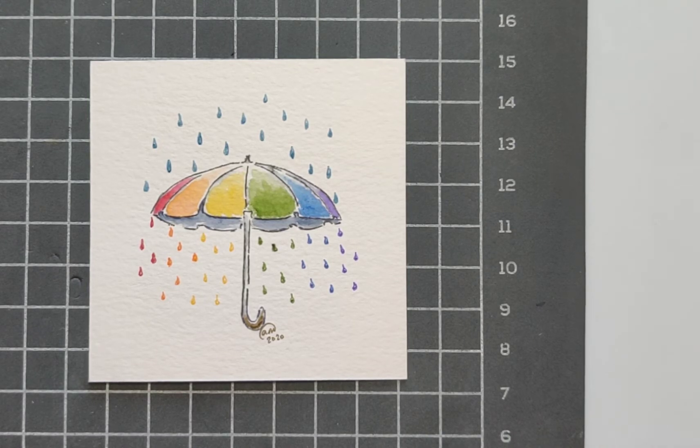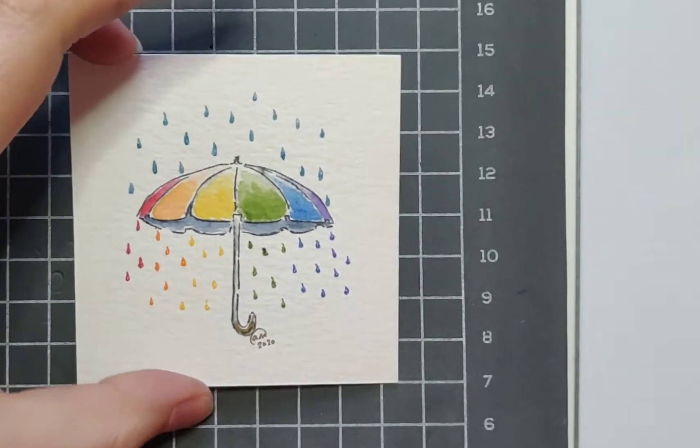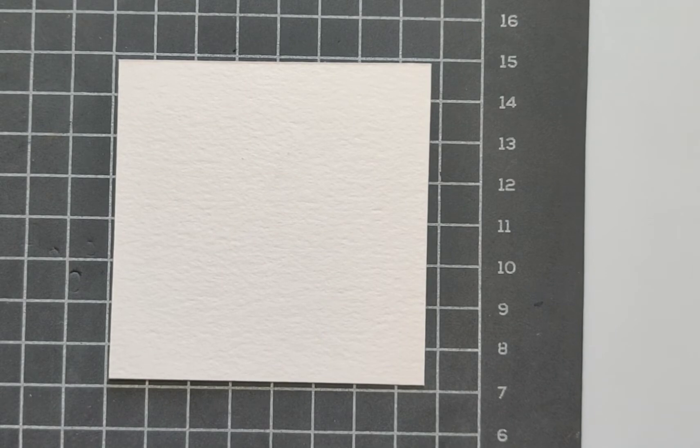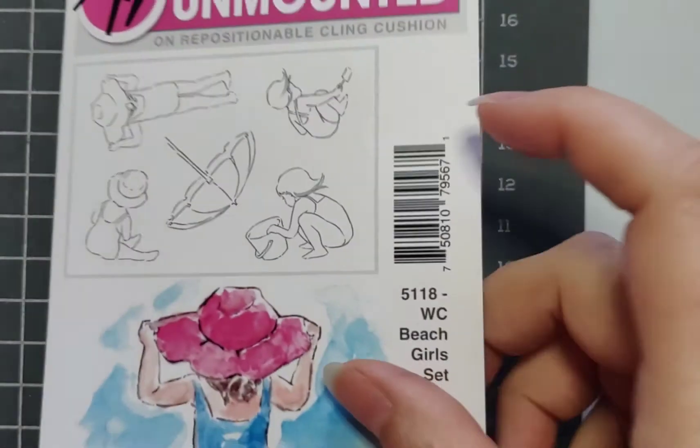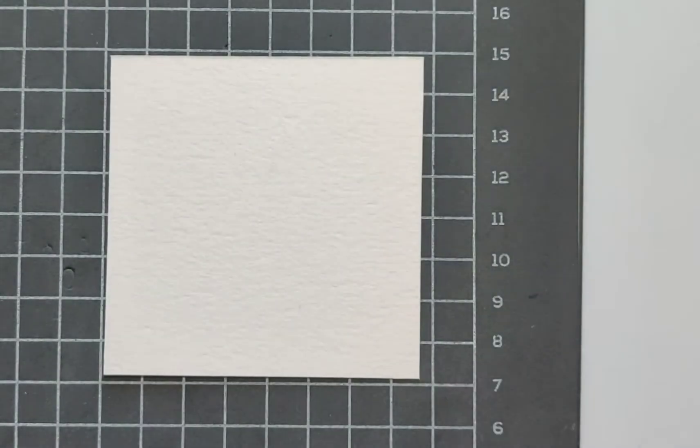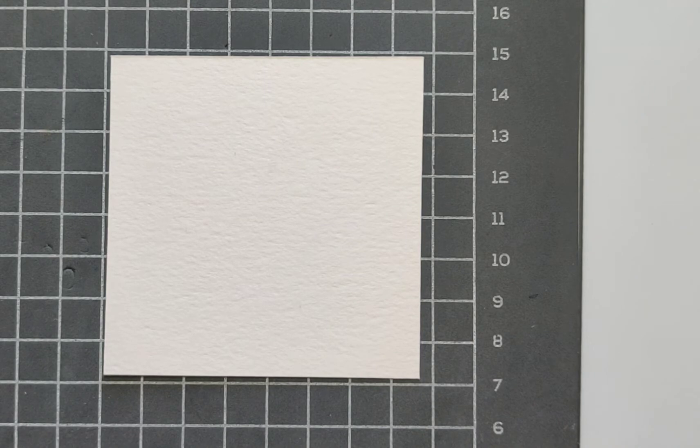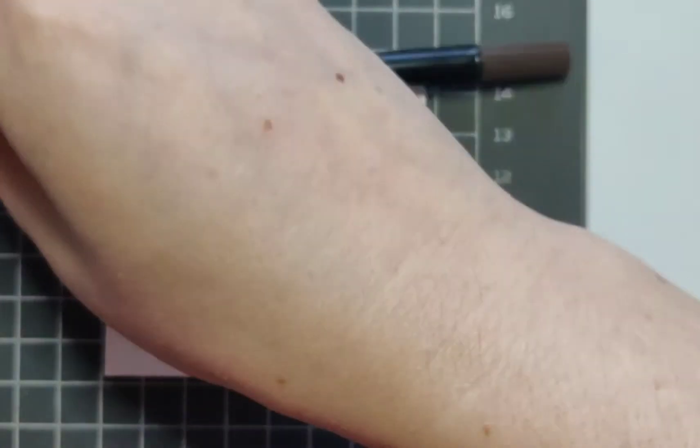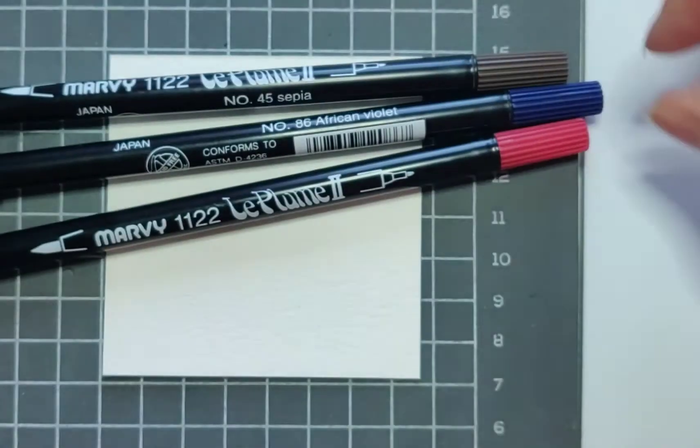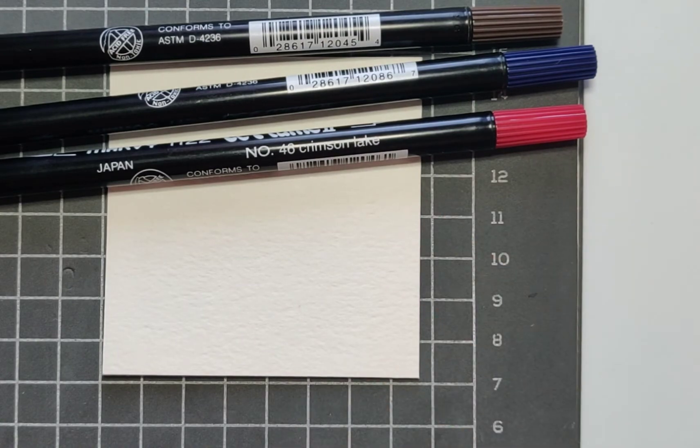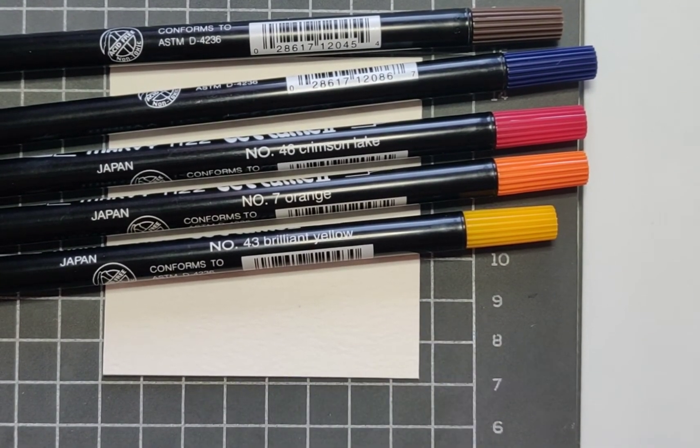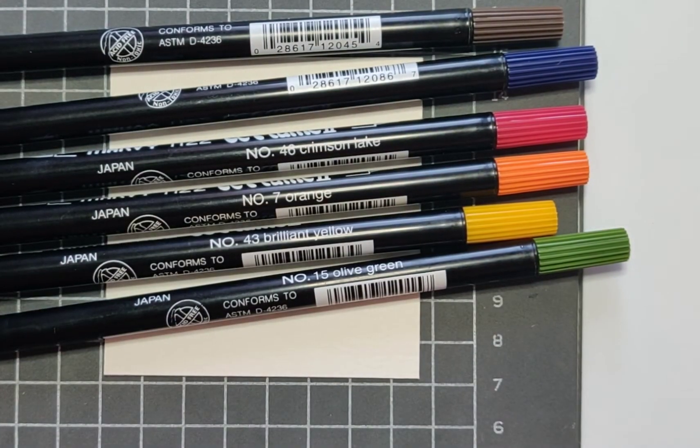For this painting, it is super small. This is a three by three square that we will be using to create this painting. And we will be doing one stamp, the umbrella from the Beach Girl set of Art Impression stamps. The colors we will be using are number 45 sepia, number 86 African violet, number 46 crimson lake, number 7 orange, number 43 brilliant yellow, number 17 olive green, and number 50 ultramarine.